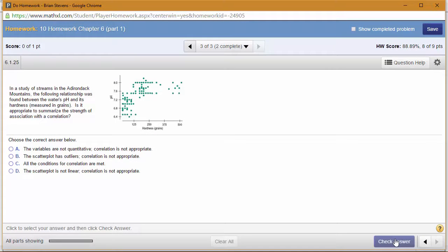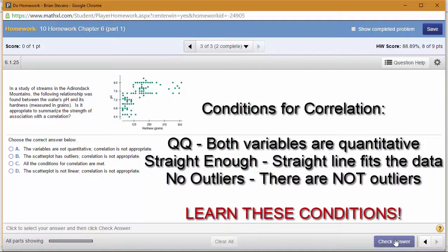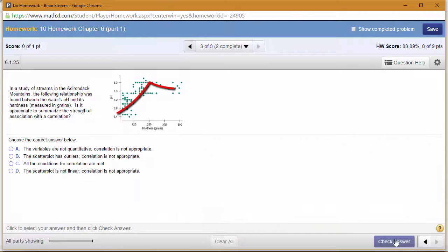Last but not least, we have the QQ: straight enough, no outliers. My class knows what I'm talking about. So which of these conditions is violated here? It's definitely the straight enough.